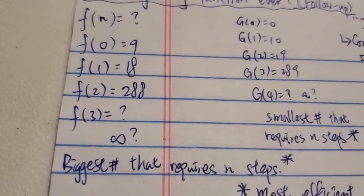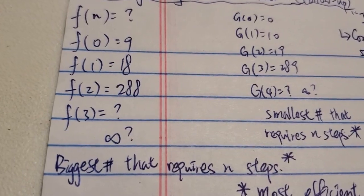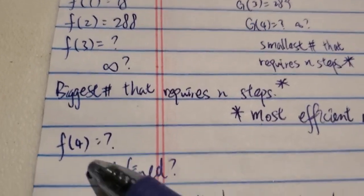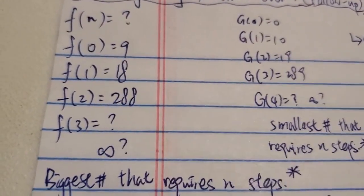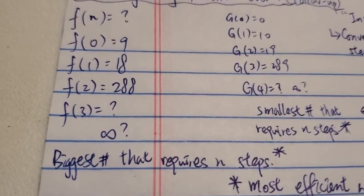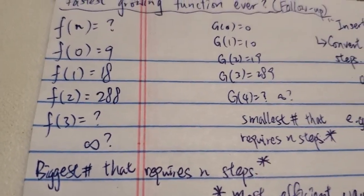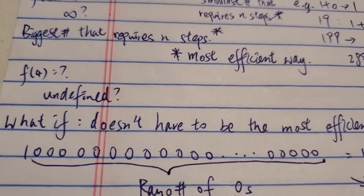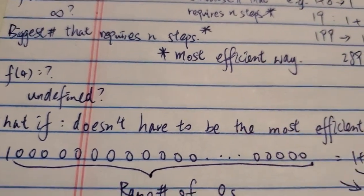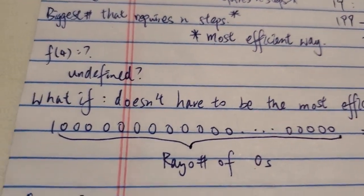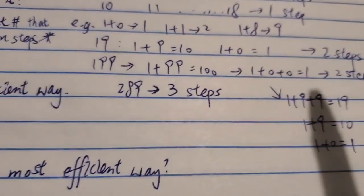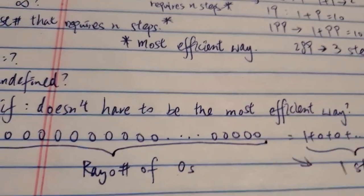But do you agree this is the fastest-growing function ever? Can you define another function that grows faster? This one clearly — if you ignore the undefined issue — it clearly grows faster than TREE(3), way faster than TREE(3), faster than busy beaver, faster than Rayo's function. It's arguable. But what if I change it one more time? What if I don't use the most efficient way — you can do it any way you want.